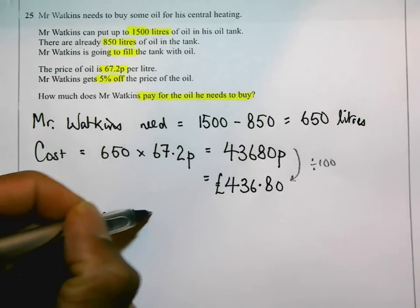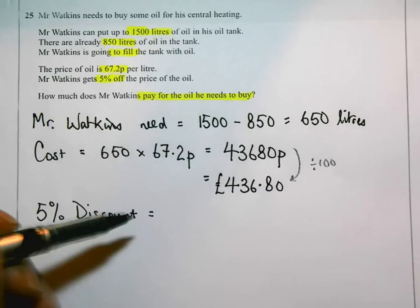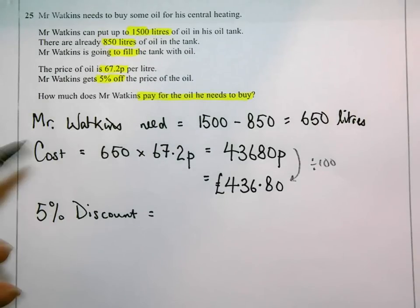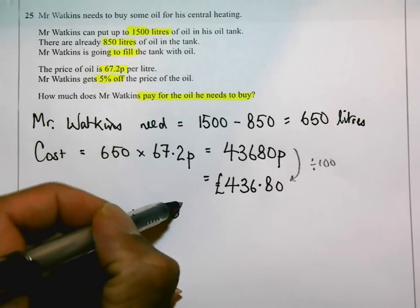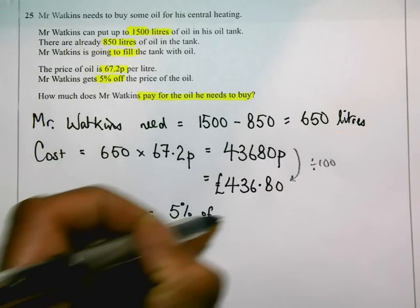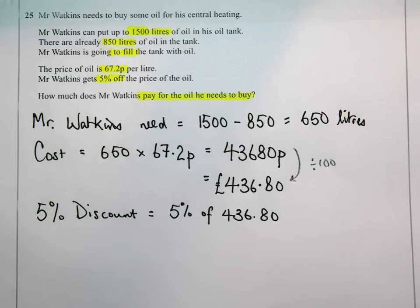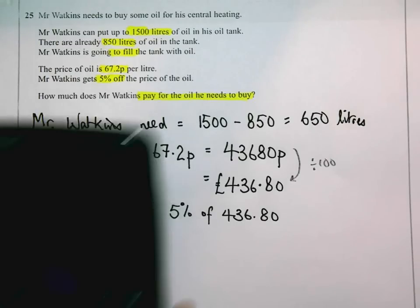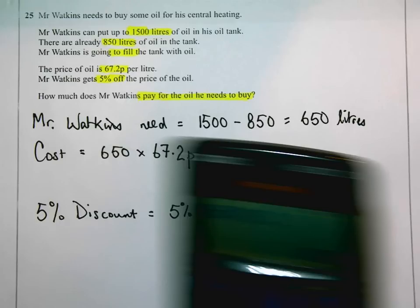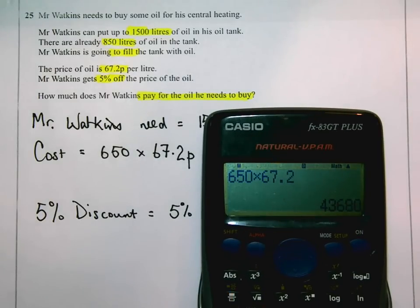If I want to work out 5%, so 5% of 436.80. So, I'm actually going to do that on the calculator.